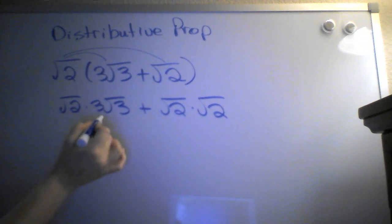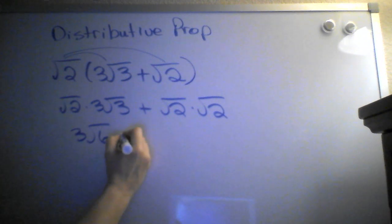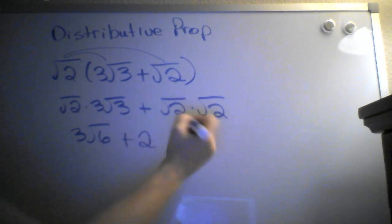Radical 2 times 3 radical 3 is 3 radical 6. Because remember, you can multiply any radicals together. You have to be careful what you add together. And then radical 2 times radical 2 is 2. Because when you multiply a radical by itself, you end up with that number. Because radical 2 times radical 2 is radical 4, which is 2.